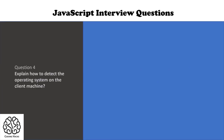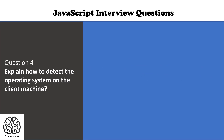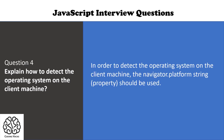Question number four is: explain how to detect the operating system on the client machine. We can use the navigator.platform property to check the operating system on the client machine.